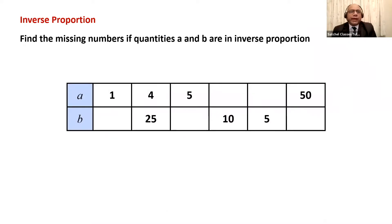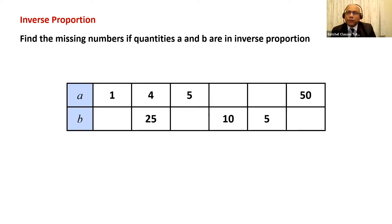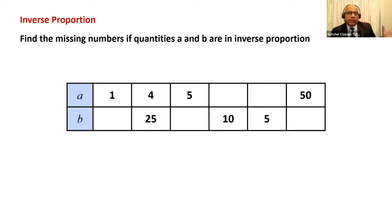Now, find the missing numbers if quantities A and B are in inverse proportion — you need to find the values missing from the table. You may choose to pause the video at this moment and have a go. Remember: if one quantity is multiplied by a number, the other has to be multiplied by its reciprocal.